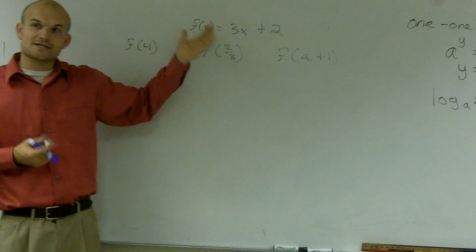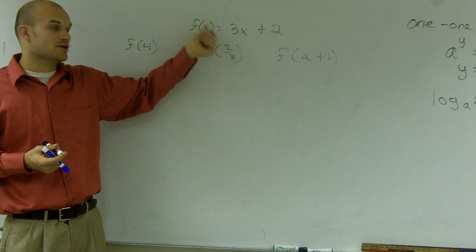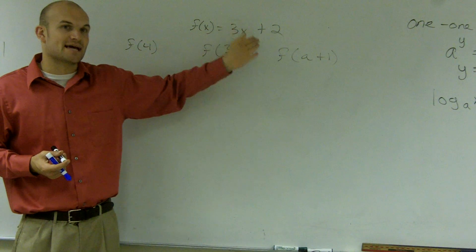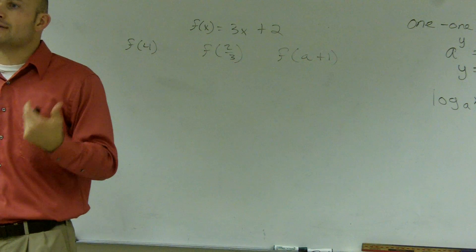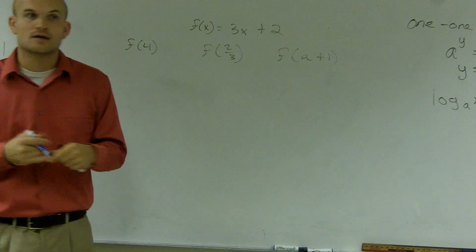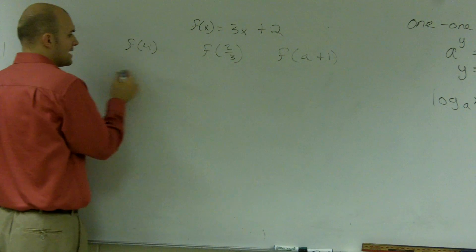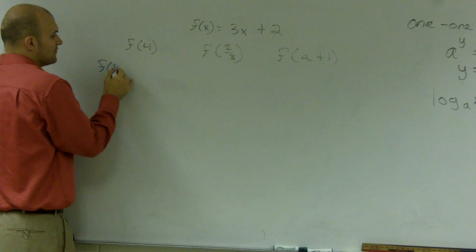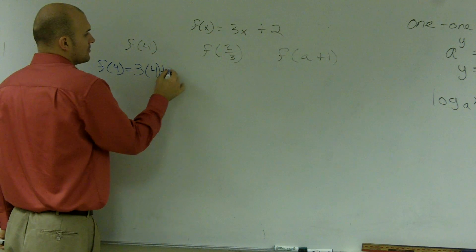So we say the relationship of the function f at x, at the value of x, is 3 times x plus 2. So what I want to do is find the value of my relationship at 4. So to do that, I am going to plug in a 4 in for my x. So I'll say f of 4 equals 3 times 4 plus 2.